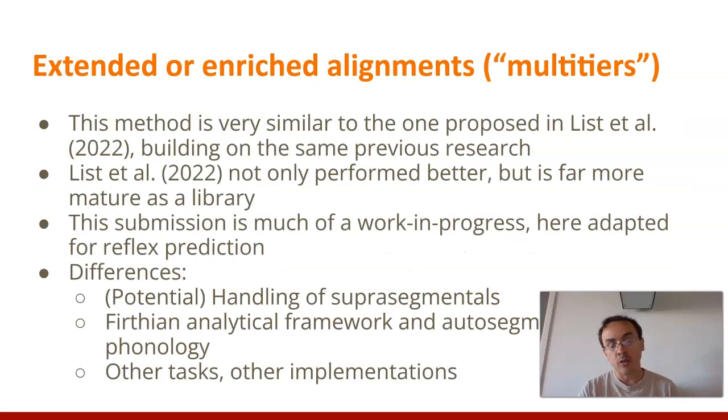What I'm presenting here is the extended or enriched alignments, also called by some people multi-tiers. It's very similar, not by chance, with the method proposed by List et al., because it's based on the same previous research and ideas, which mostly come from the theses of Mathis List, the first author there. The solution they are presenting not only performs better than the one I'm presenting, but it's far more mature as a programming library. Mine is still very much a work in progress, and it's here adapted. But there are some differences, which is what I'm going to highlight here. The handling of super-segmentals or the potential handling is quite different. There is a stronger background on Firthian analytical framework and auto-segmental phonology, which might be a problem for my solution. And it's more designed for other tasks and other implementations. Reusing it for cognitive prediction was kind of a different solution from where it was intended.